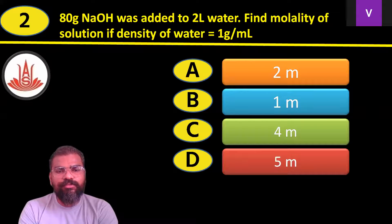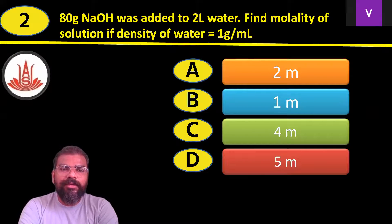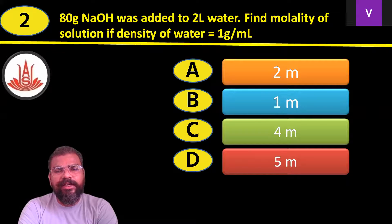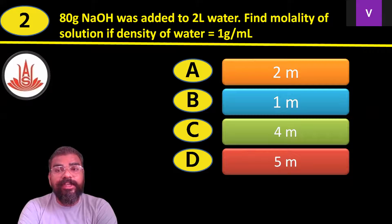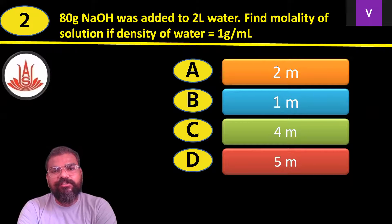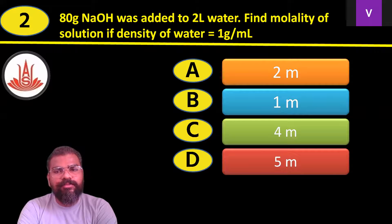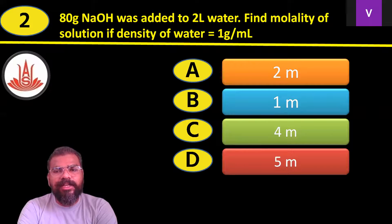Question number 2: 80 gram of NaOH was added to 2 liters of water. Find the molality of the solution if the density of water is 1 gram per ml. Option A: 2 molal. Option B: 1 molal. Option C: 4 molal. Option D: 5 molal.